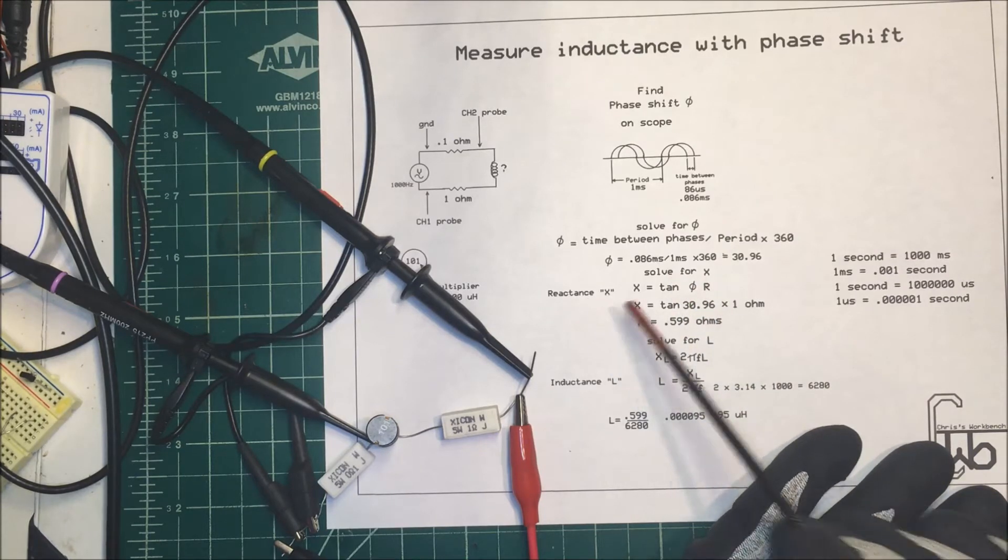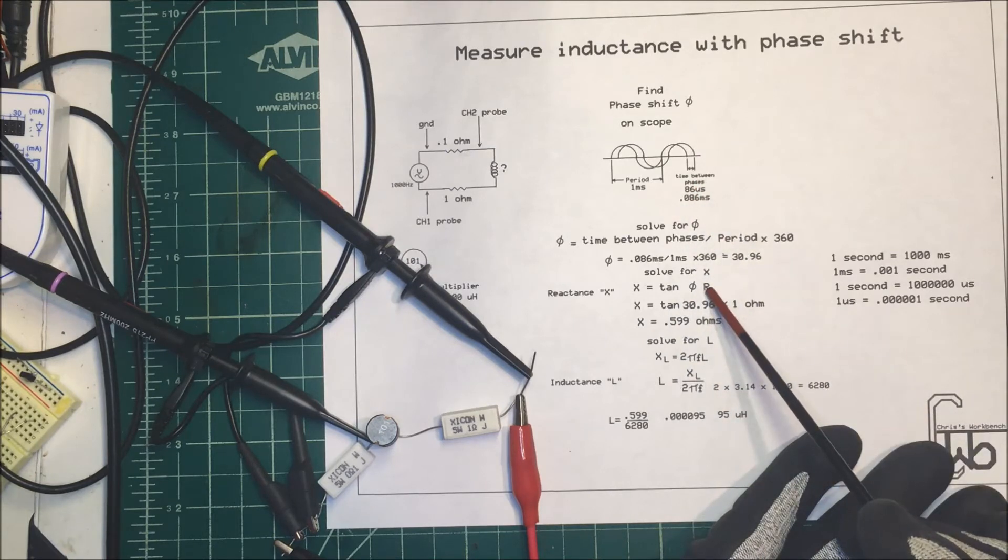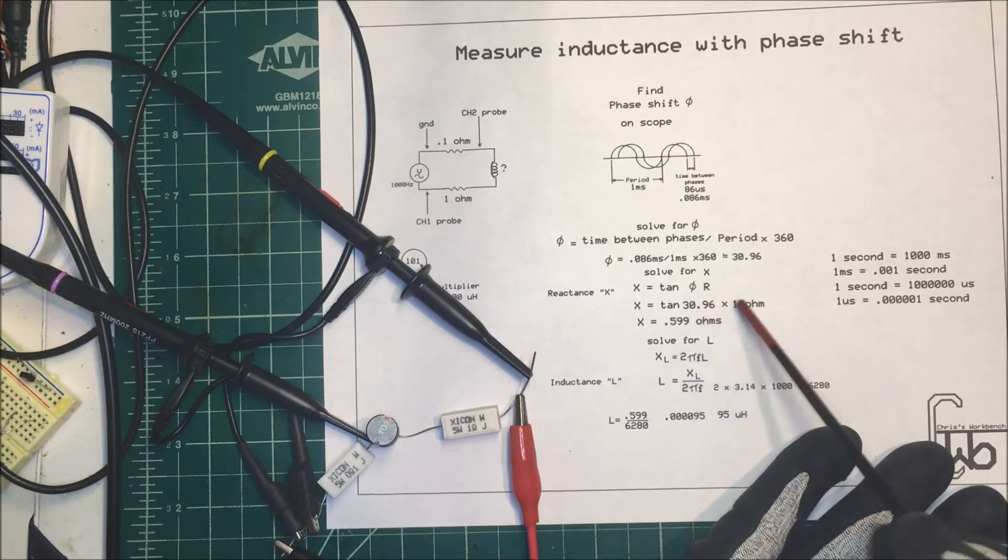X is equal to the tangent of that angle times the resistance. So the tangent of 30.996 degrees times one ohm, I did that on the calculator, it's going to be 0.599 ohms.